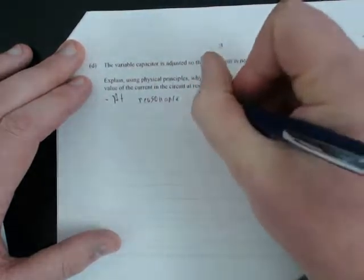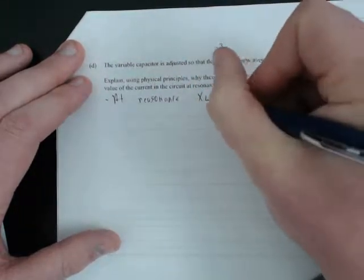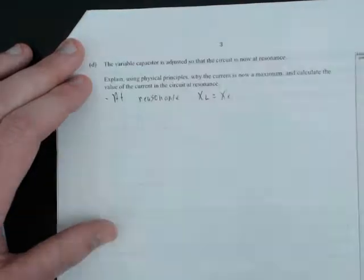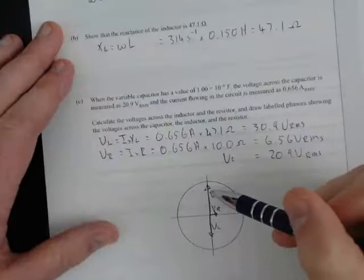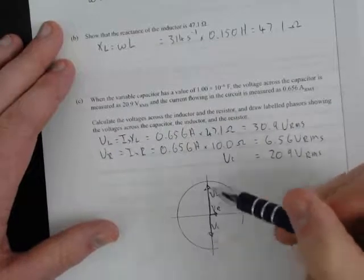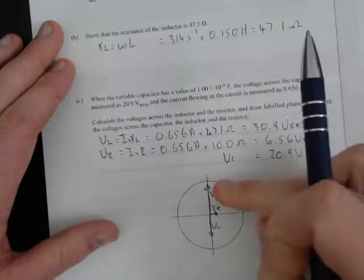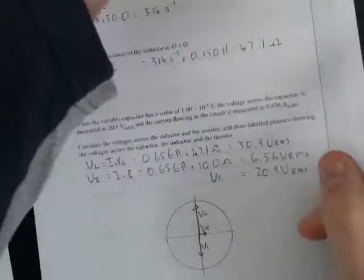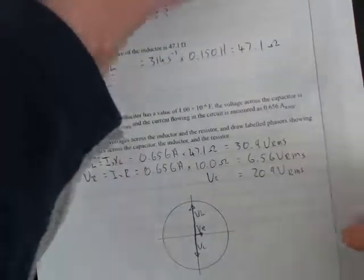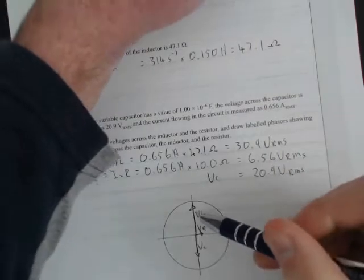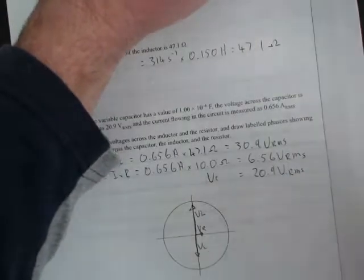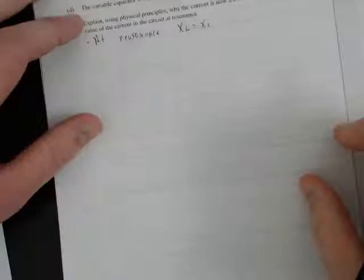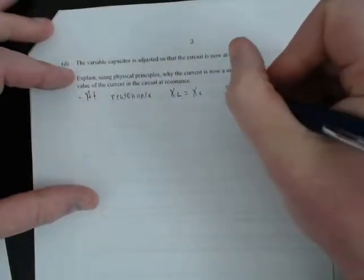At resonance, the reactance of the inductor is equal to the reactance of the capacitor. If we look at it in terms of vectors, if we set our reactances equal, that means the voltage from the inductor cancels the voltage from the capacitor, or the reactance for the inductor cancels out the reactance for the capacitor.